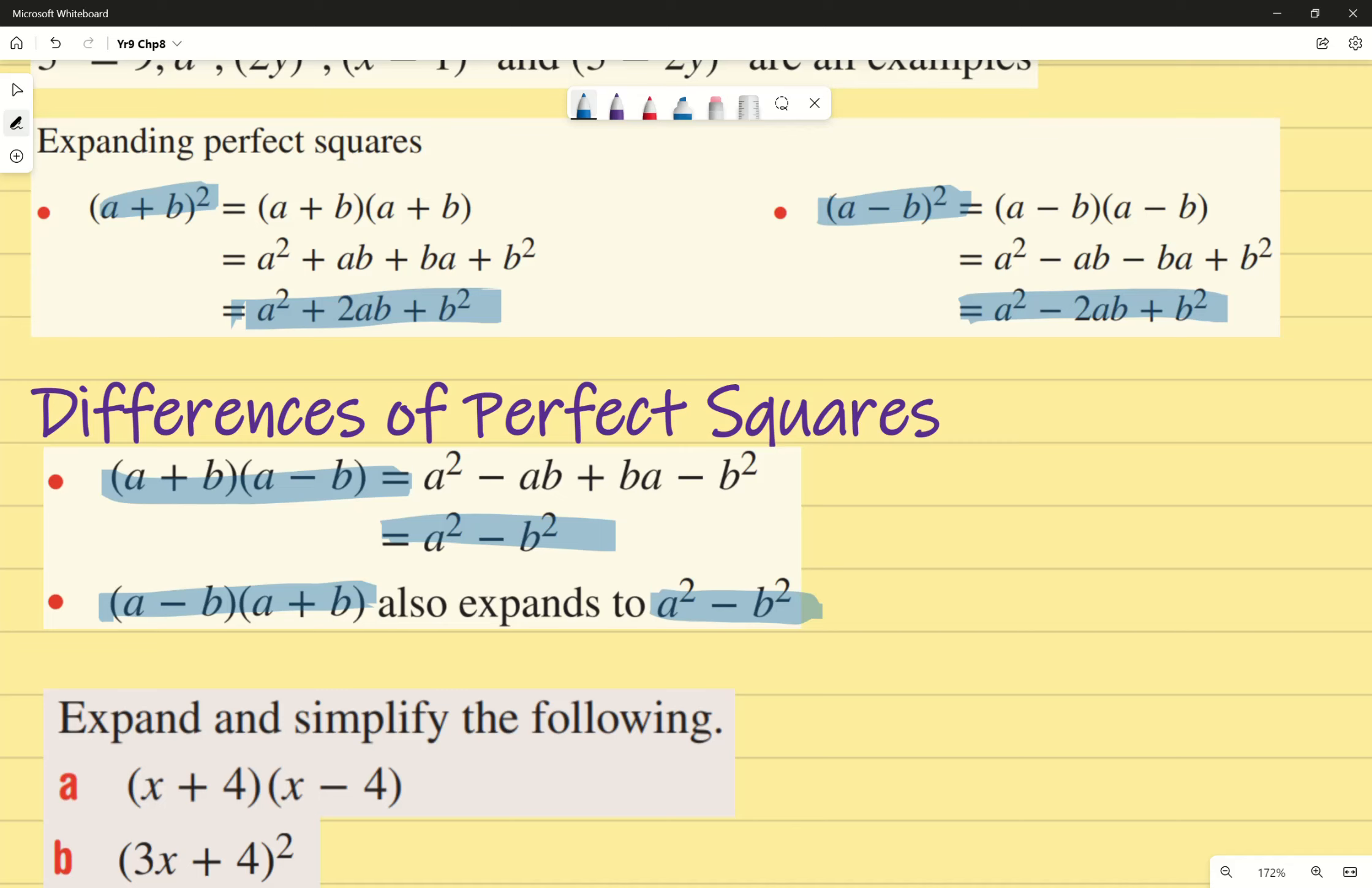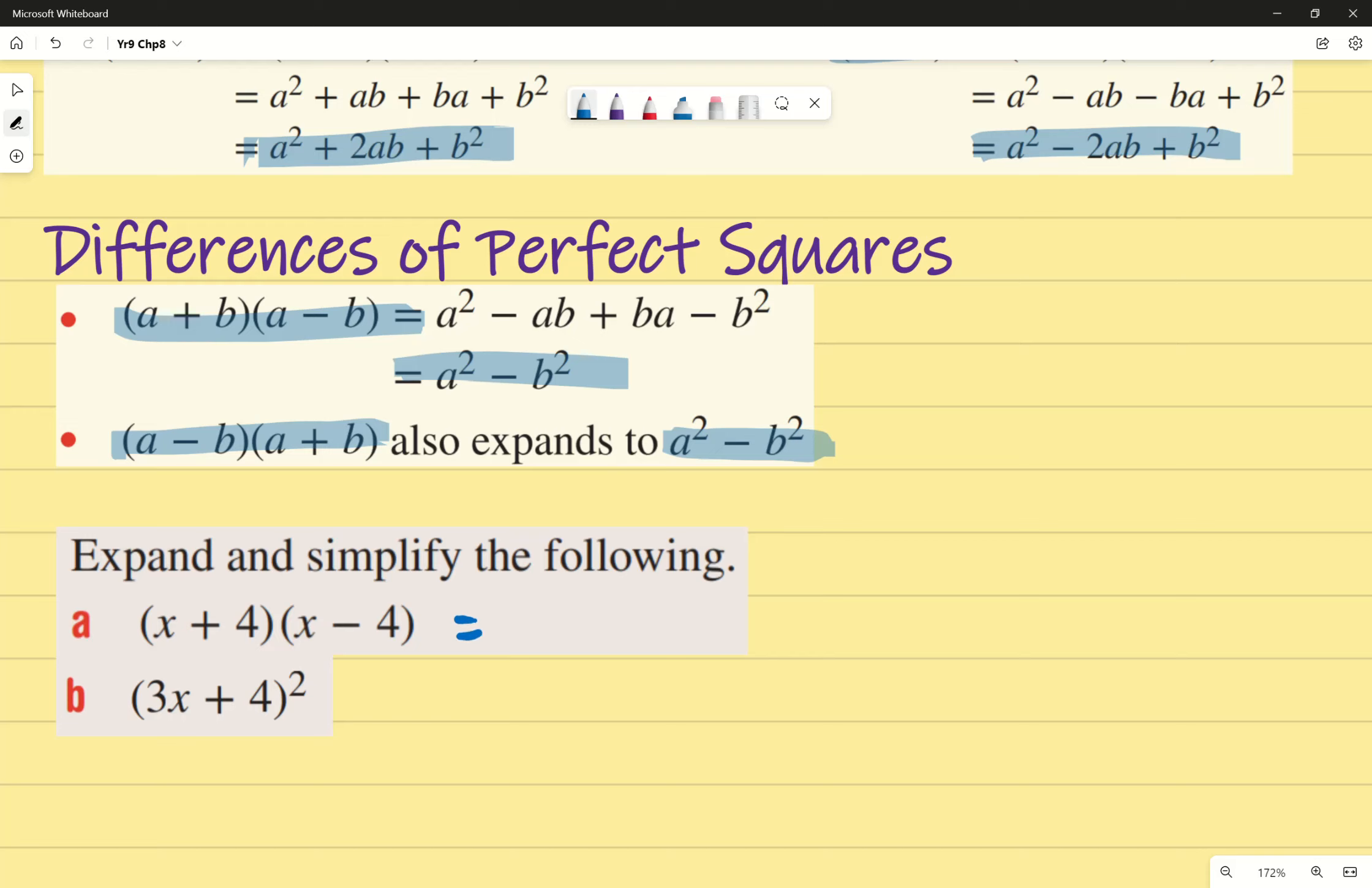This one. I'm going to use the normal FOIL approach - that's just what I prefer. I'm going to go ahead and say x times x gives me x², that's the first. x multiplied by -4, which is -4x. Positive 4 multiplied by x, which is 4x. And last, which is -16. Which simplifies to - and again, these two terms cancel out - we end up with x² - 16. You'll note it's the same approach as before. If you wanted to, you could say that it's the same as x² - 4² because it's the same formula. I'm going to keep it at 16, I prefer that.